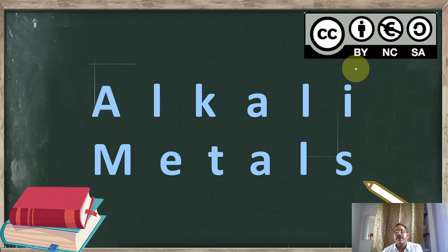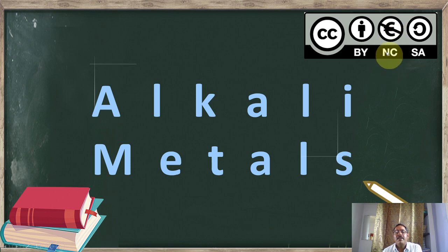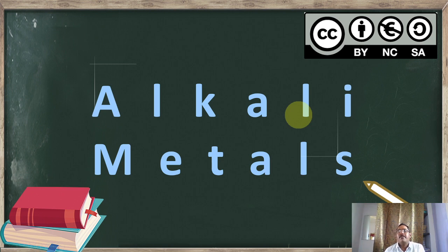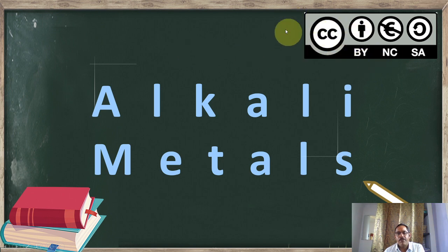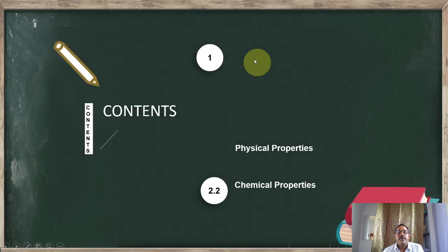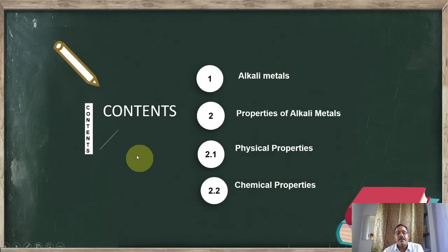The image you see here is for Creative Commons. CC means Creative Commons, NC means non-commercial, so these presentations can be shared for non-commercial purposes. They will be in the public portal, that is why Creative Commons symbols are used. We will study alkali metals' properties, which are divided into physical and chemical.